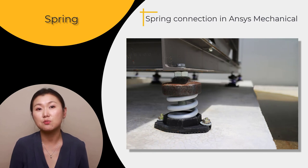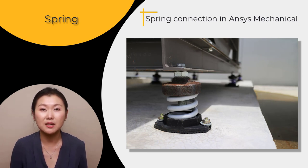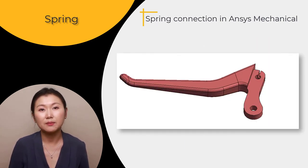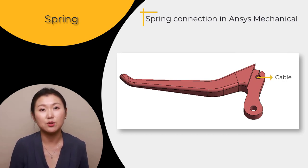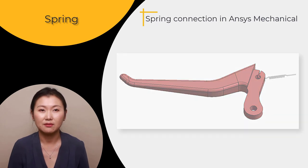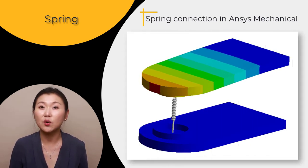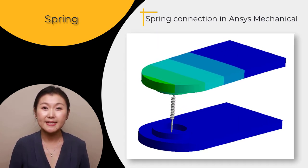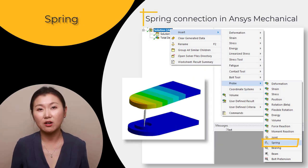Although spring connections can be used to model an actual helical spring in a system, they can also model the behavior of any component with stiffness acting predominantly in one direction. For example, to perform a linear stress analysis of a bicycle brake lever without modeling the cable connecting the lever to the brake part, the effect of the cable can still be accounted for by representing it as a spring connection. As an engineer, you would be interested in the elongation or relative displacement between the two ends of the spring, which can be determined using a result called the spring probe.